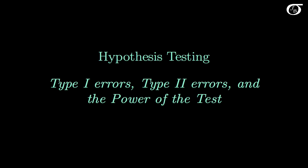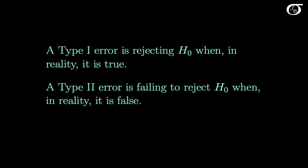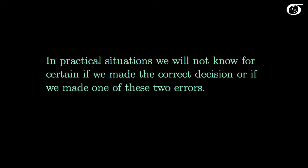Let's look at type 1 errors, type 2 errors, and the power of the test in hypothesis testing. A type 1 error is rejecting the null hypothesis when, in reality, it is true. A type 2 error is failing to reject the null hypothesis when, in reality, it is false. In practical situations we will not know for certain if we made the correct decision or if we made one of these two errors.